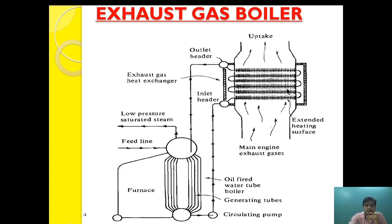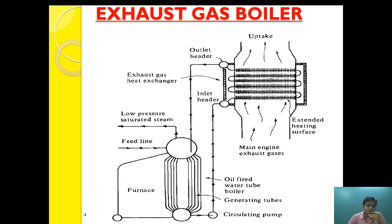To enhance heat transfer in the exhaust gas boiler, tubes are provided with mild steel fins. The staggered fins divert the exhaust gas coming from the main engine, giving more contact time for the heat exchange process and improving efficiency. However, if the exhaust gas contains sulfur and other impurities and the temperature falls to around 170 to 180 degrees Celsius, the sulfur will settle on the tubes and cause corrosion.